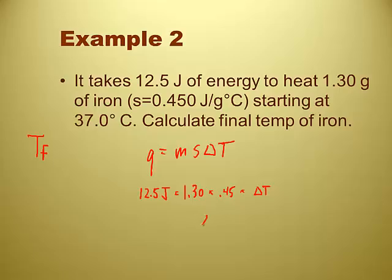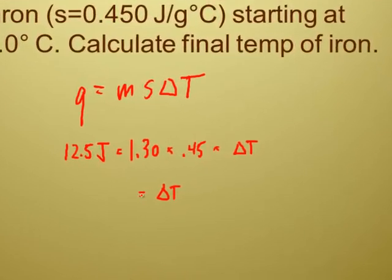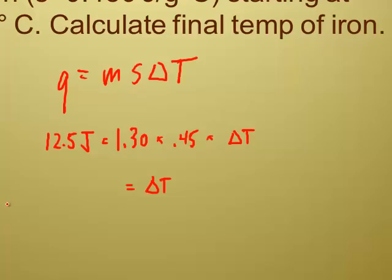Now the 37.0 degrees Celsius isn't used just yet, right? No. We're doing this in two steps. So 1.3 times 0.45. I'm just going to solve for delta t. I'm going to put 12.5 divided by left parenthesis, 1.3 times 0.45, close parenthesis, and you get 21.4 degrees Celsius.